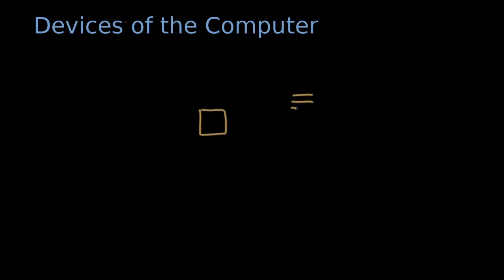Over here we have memory, and over here we have our program. The only thing a processing unit can do is to read some data from memory, perform some computation on it, and write back. When the program is done, memory has been changed.